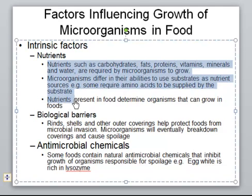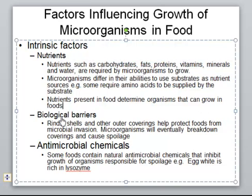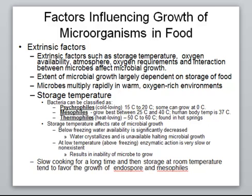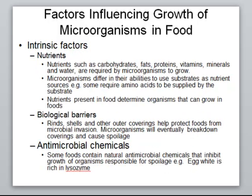The richer the nutrient content of the food, the better it will support the growth of microorganisms. Biological barriers are basically the skin of the food. For example, a tomato with intact skin will not go bad as quickly as a tomato with damaged skin. Majority of foods have some kind of skin or cover that prevents spoilage. Additionally, some foods produce antimicrobial enzymes like lysozyme, which attacks and destroys bacteria. These are all intrinsic factors — factors found within the food.